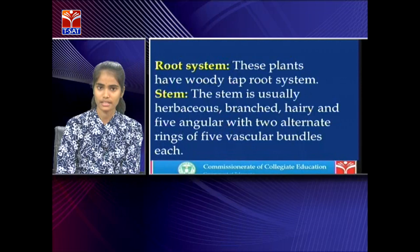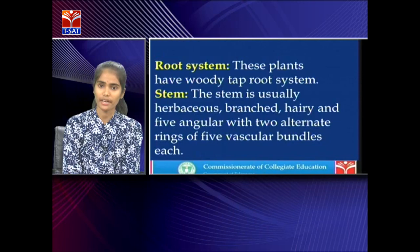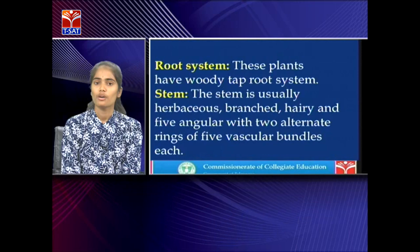These plants commonly have a tap root system. The stem is usually herbaceous — that is, soft — and branched, hairy, and five-angled with two alternate rings of five vascular bundles each. When we take the transverse section of the stem, we get five angles in their vascular bundles.